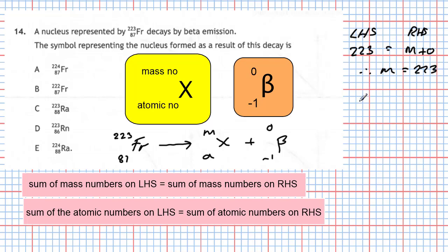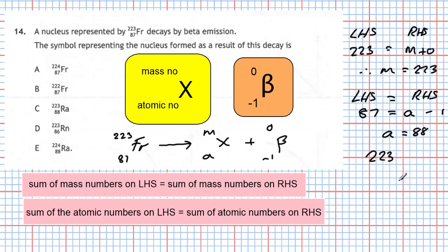For the atomic numbers: on the left-hand side we have 87, and on the right-hand side we have the missing atomic number A plus minus one. So A equals 88. Our missing element has a mass number of 223 and an atomic number of 88. Looking at the list of answers, that must be radium, so the answer is C.